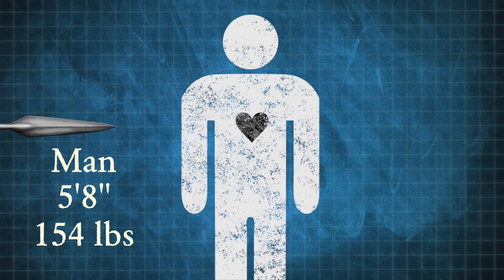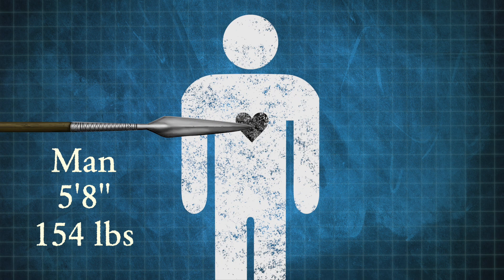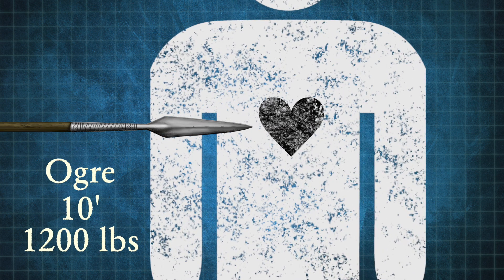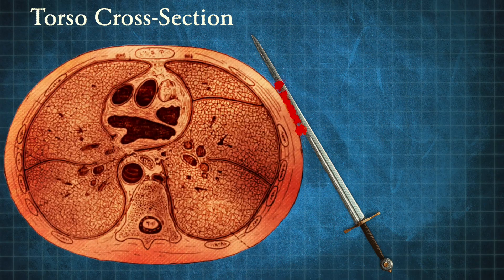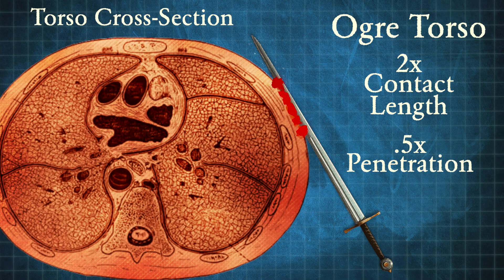Given a particular amount of penetration from a particular weapon, a thicker body will be proportionally less damaged, and the wound will be less likely to reach vital organs. In addition, for cuts, the larger the circumference of the body, the greater the length of the blade that will be in contact, meaning that the force per unit length will be lower, making the cut long and shallow — or in the case of armor, may not be penetrating at all.